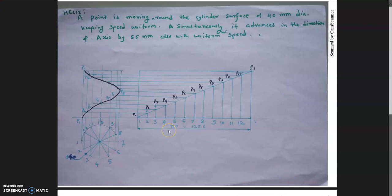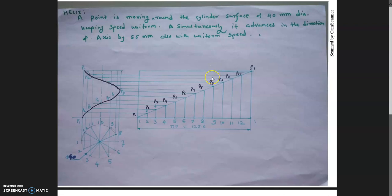Good morning. Today we will see the helix on cone and helix on cylinder. Basically, a helix is a curve that is generated by a point moving uniformly on the surface of a cylinder or cone. There are many applications of the helix — thread, worm, helical staircases, or the shape of a spring. Here we will see helix on cylinder and helix on cone.